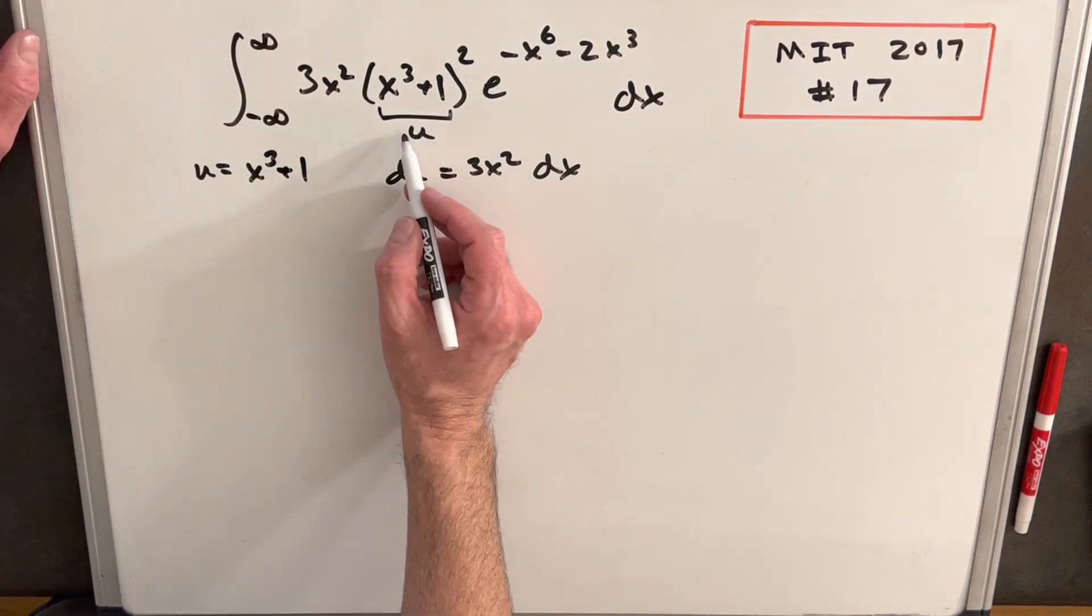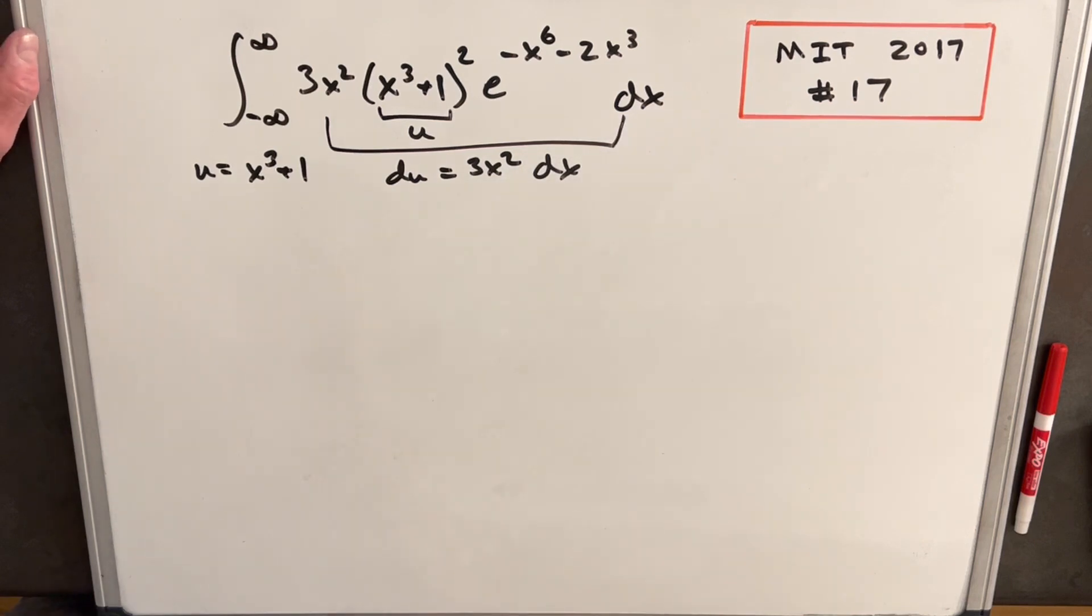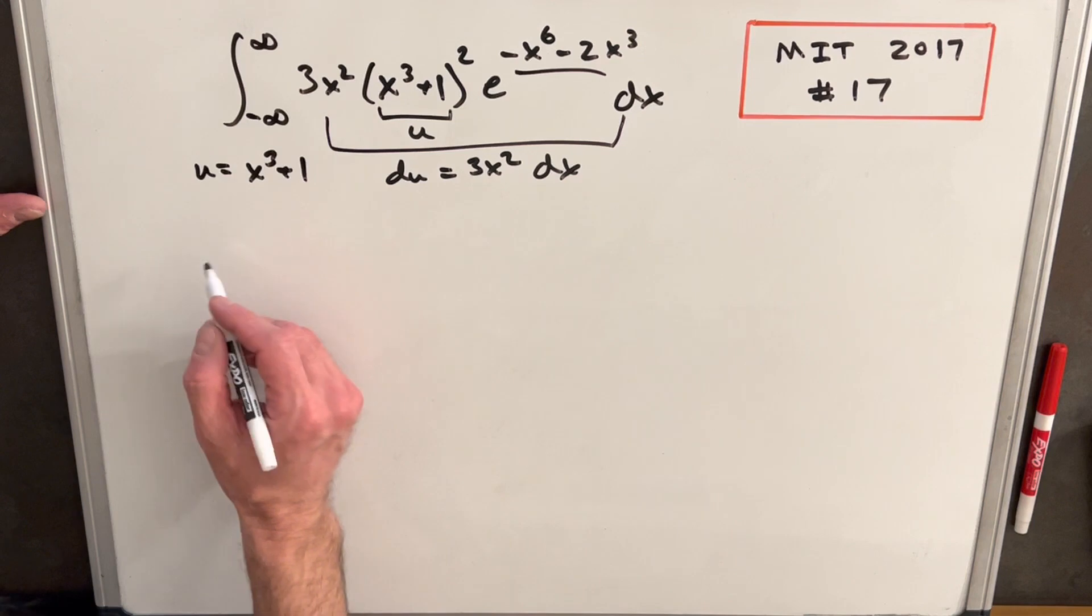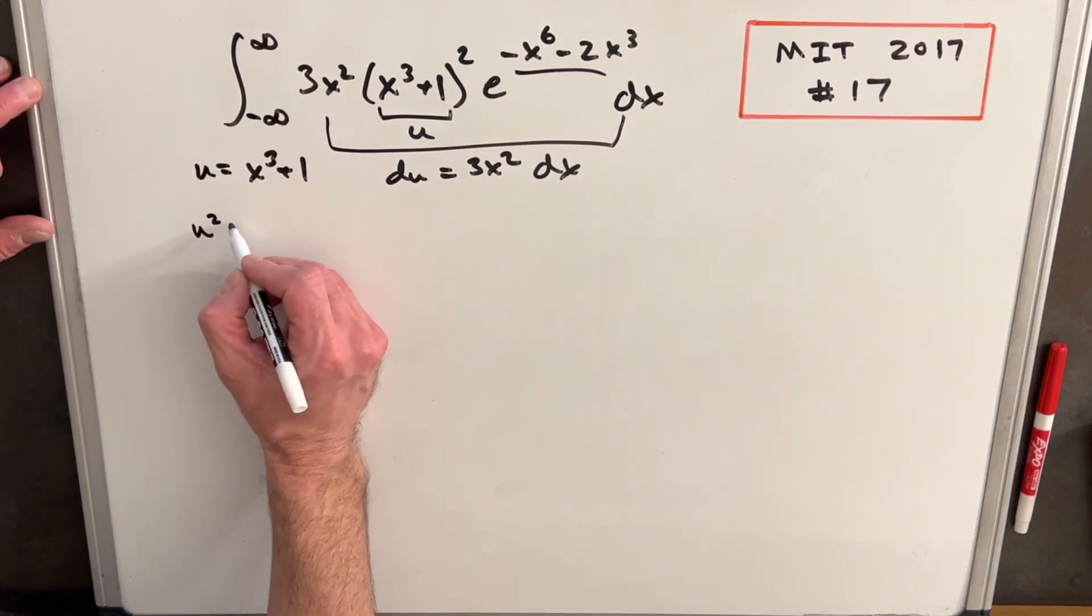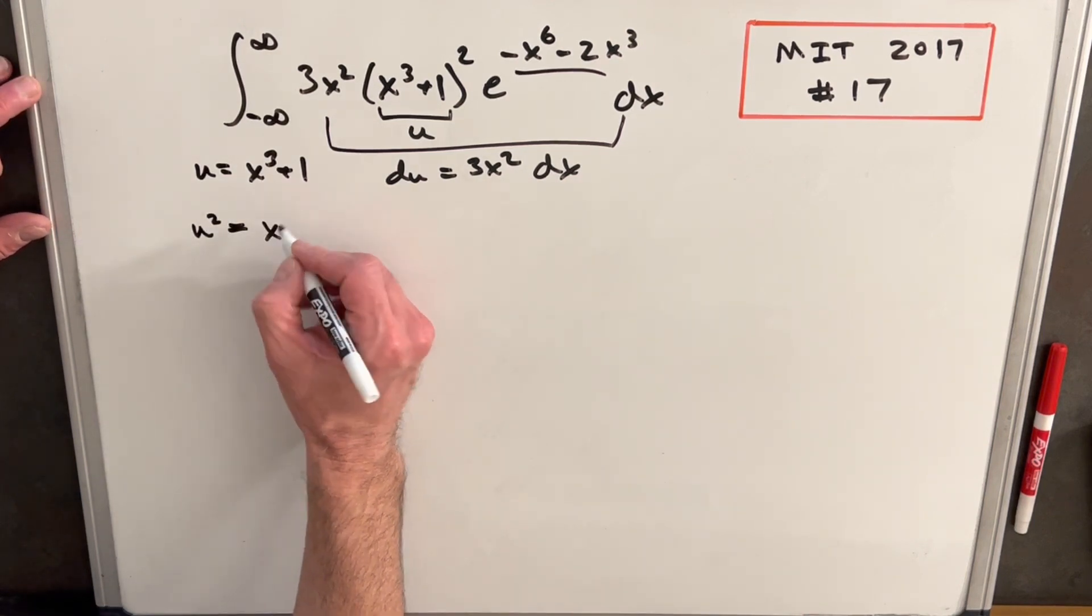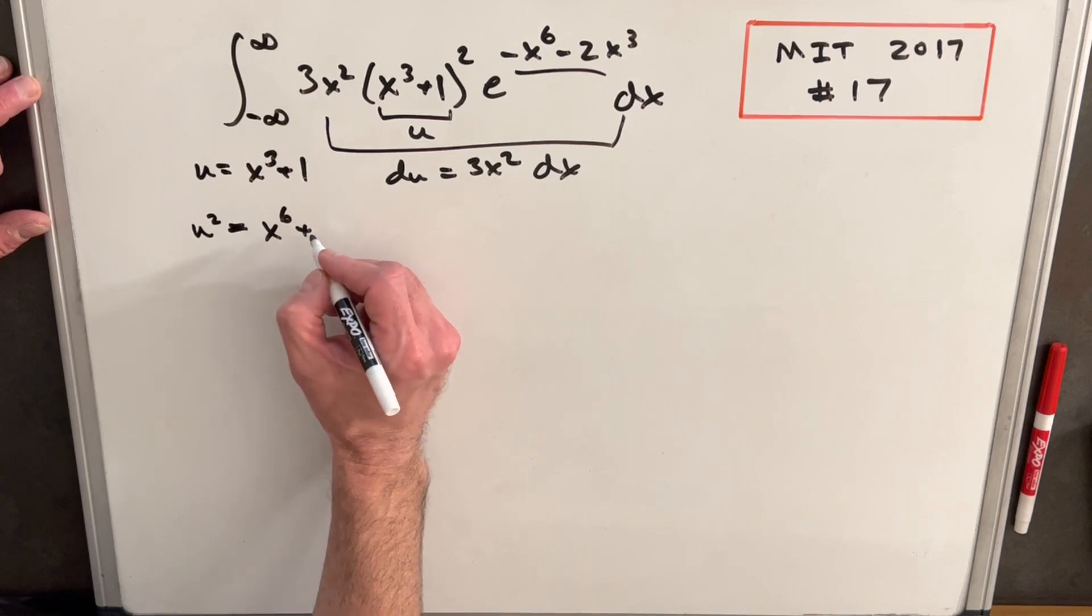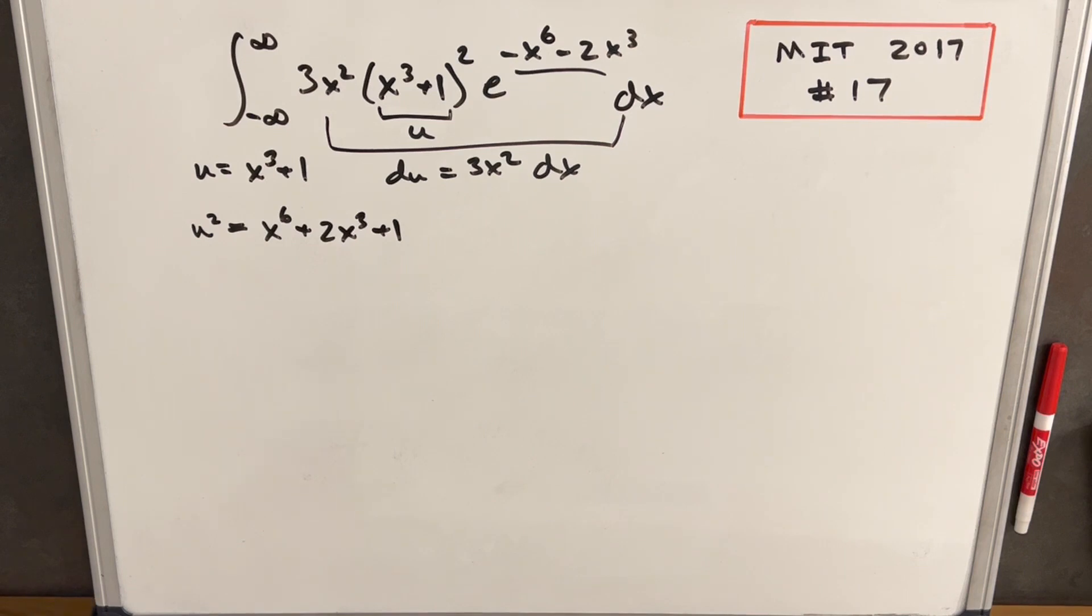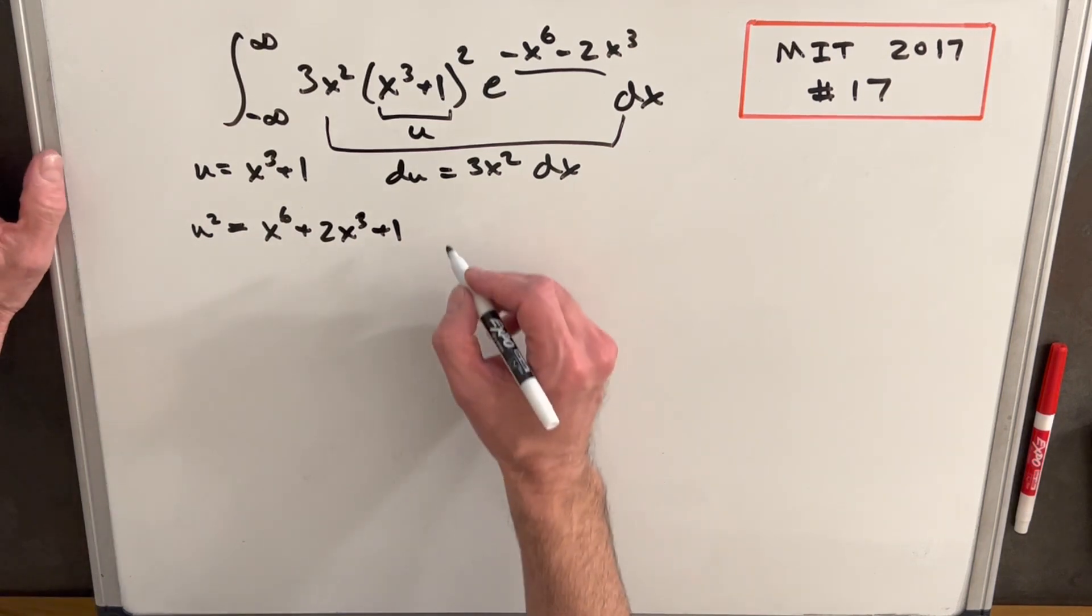So clearly we've simplified this to a u. We've got our du right here. Now I wonder what we can do with this piece. It looks kind of like, let's see what happens if we look at u squared. So u squared is going to be x to the 6 plus 2x cubed plus 1.